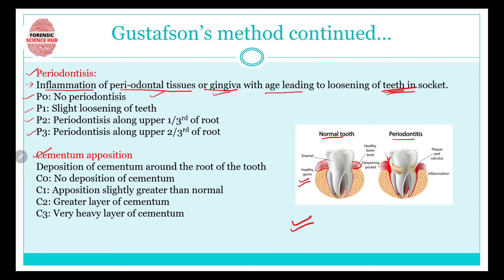The fourth criterion is cementum apposition, meaning the deposition of cementum around the root of the tooth. C0 means no deposition of cementum. C1 means apposition is slightly greater than normal. C2 means there is a greater layer of cementum. C3 means there is a very heavy layer of cementum.